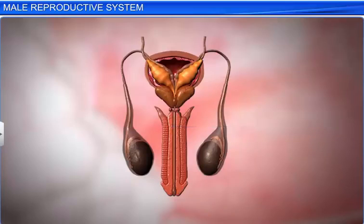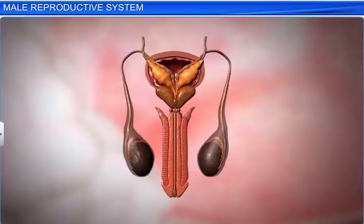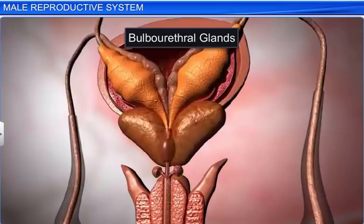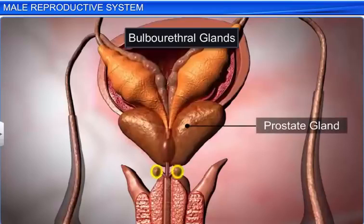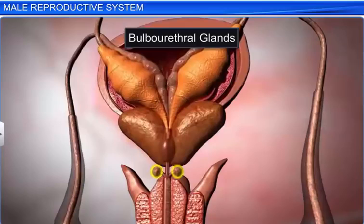The prostatic fluid contains calcium, citrate, and phosphate ions. The bulbourethral glands, or Cowper's glands, are pea-sized structures lying posterior to the prostate gland and at the base of the penis. Their secretions help in the lubrication of the penis.